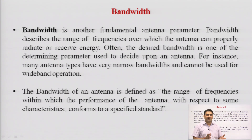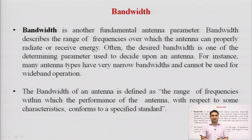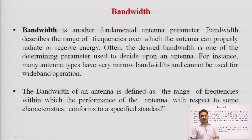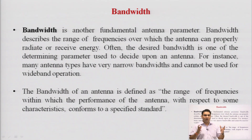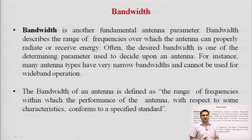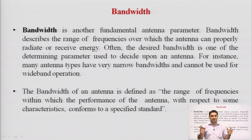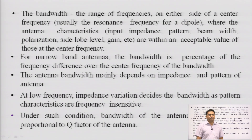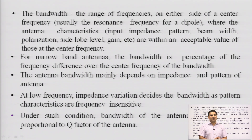Bandwidth is a fundamental antenna parameter which describes the range of frequencies over which the antenna can properly radiate or receive energy. Often the desired bandwidth is one of the determining parameters used to decide upon an antenna. Many antenna types have very narrow bandwidth and cannot be used for wide bandwidth applications. For wide applications, the bandwidth must be very high, meaning the range of frequencies for operation should be very large. Bandwidth is the range of frequencies on either side of the center frequency defined for different antenna designs.